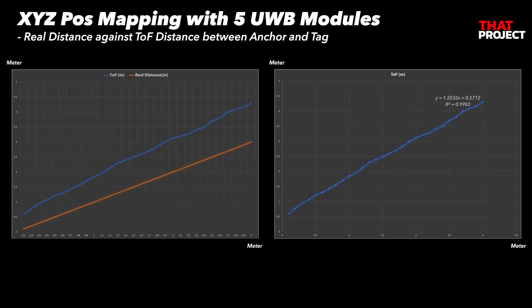This is the dataset I got from my experiment. In the chart on the left, blue is the distance data obtained from the sensor, and orange is the actual distance. When the tag and anchor are 10 cm apart, the TOF distance reads approximately 50 cm. When they are actually 3 meters apart, the TOF distance is above 4.3 meters. We can note that the greater the distance between the two devices, the greater the error.